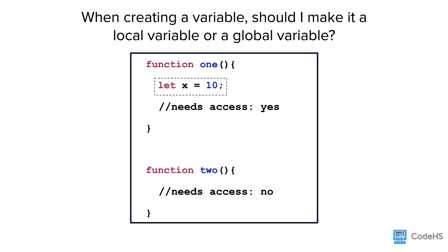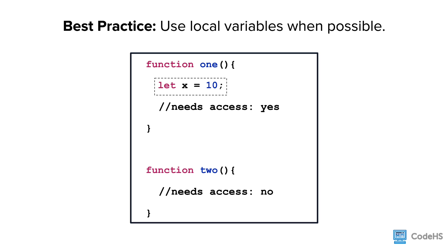If only one of the functions needs access to the variable, then it should be created locally. When it comes to global and local variables, it is best practice to lean toward creating local variables. This ensures that the variables are limited only to the scope they need. If not, we run the risk of changing or overriding a global variable when we don't mean to.